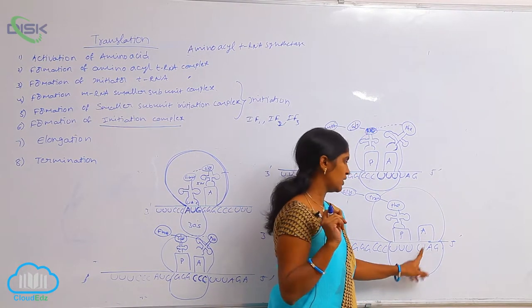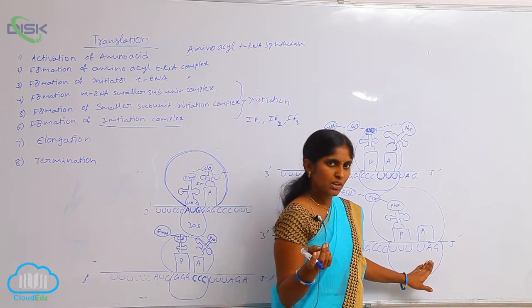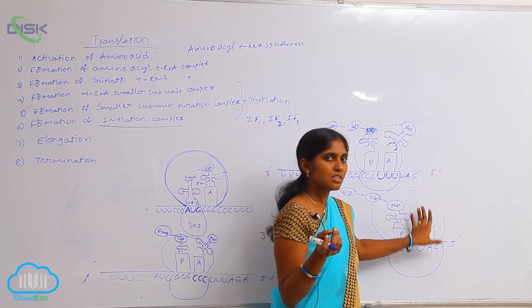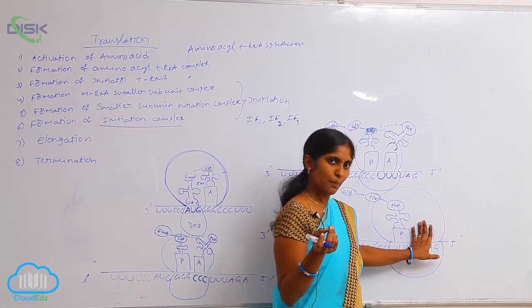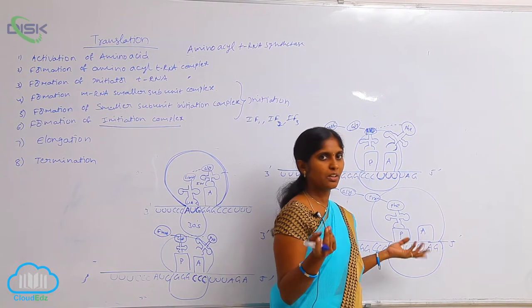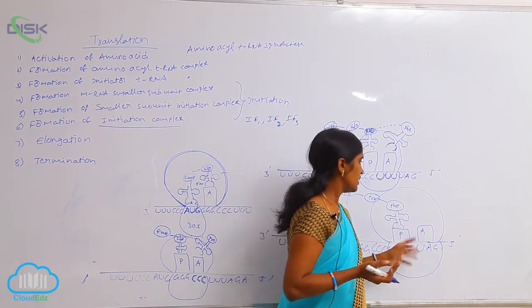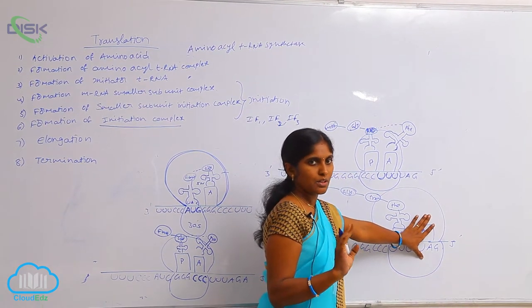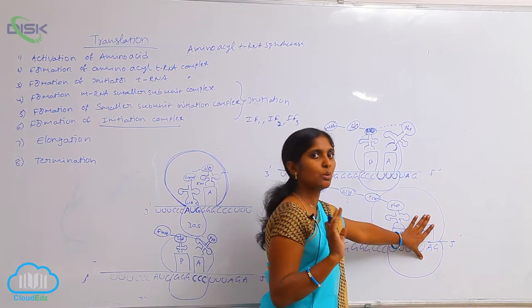In the presence of termination codon, there is no coding of amino acid. It means here the translation is stopped. The protein synthesis is stopped. Because no entry of any type of amino acid. So, that is why here the termination is happened due to the presence of termination codons.